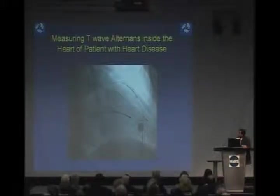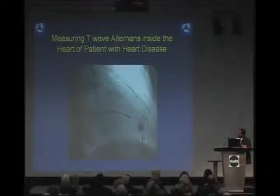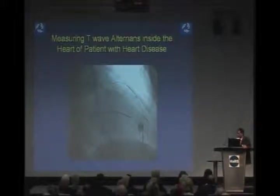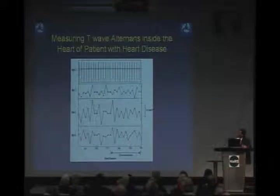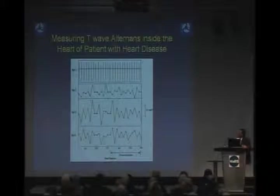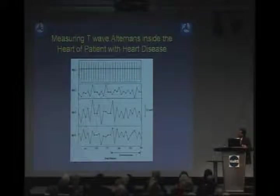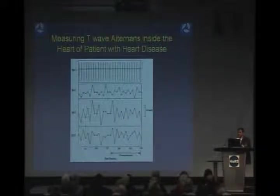What you see here are two recording electrodes in the heart — this is an x-ray picture — and each of these little black dots is a recording electrode. We're recording from three sites, and what you see is alternans of the T-wave: it goes high, low, high, low, high, low. The size or amplitude of the alternans is different across sites. Not only is there alternans in a patient with heart disease, but it's different all over the heart.